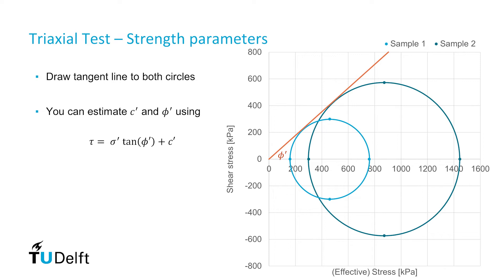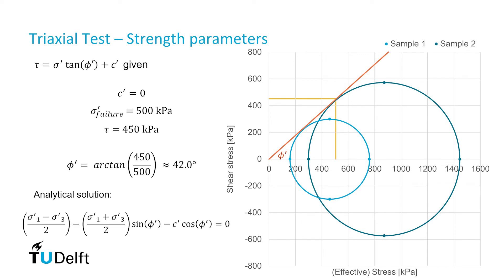C-dash equals zero because of the intersection of the failure criterion with the origin. The failure stress is equal to 500 kPa and the shear stress is equal to 450 kPa. Phi-dash can now be determined using a graphical solution with the arc tangent, and the analytical formula on the bottom of the slide can also be used simultaneously to solve for phi-dash.